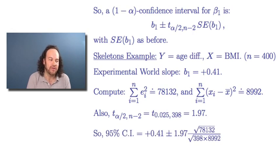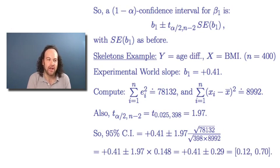And then we can get the confidence interval the same as before. We take the observed value, the plus 0.41, and then plus or minus that critical value, 1.97, times the square root of the sum of the ei squareds, divided by the square root of n minus 2 times the sum of the Xi minus X bar squareds. And when you work that all out, it works out to an interval of between 0.12 and 0.70. So now we can say that when you're comparing the age difference for the skeletons compared to the BMI or the body mass index, we think the slope is plus 0.41, but we're 95% confident that it's between 0.12 and 0.70.